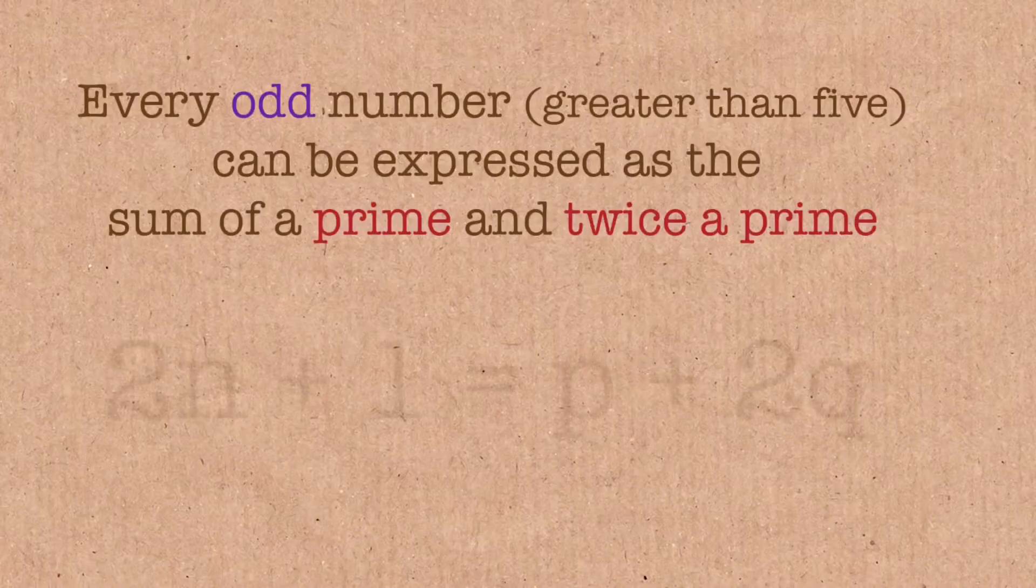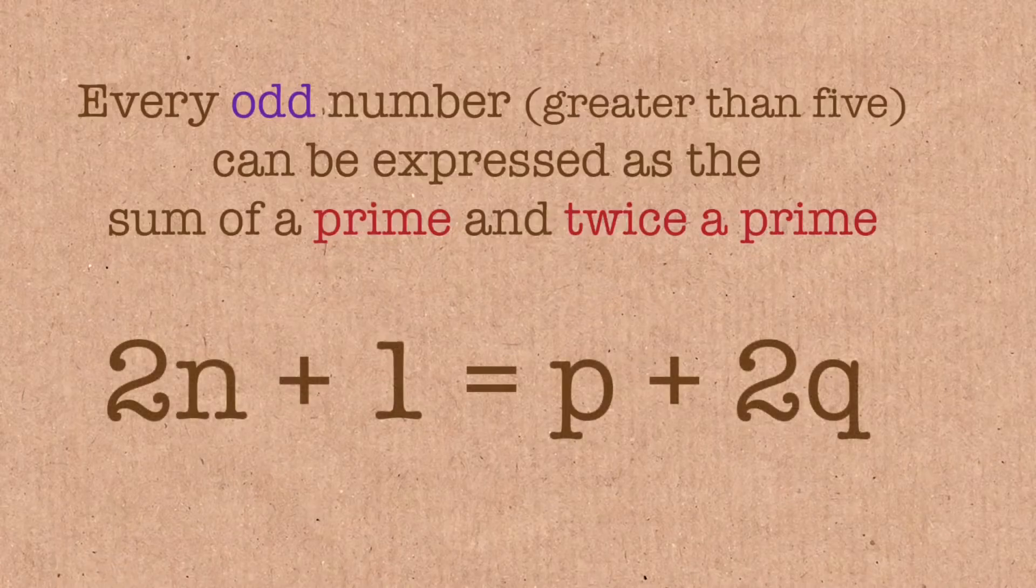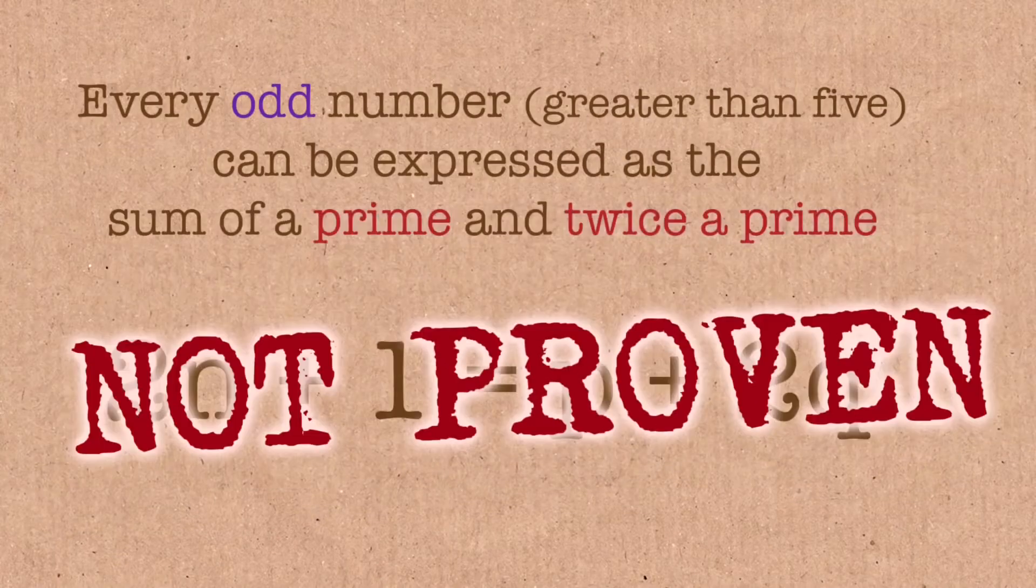So the sum of three primes would take two of them to be equal. So they conjectured that that was true. Nobody can prove that either. But all these things seem very likely to be true.